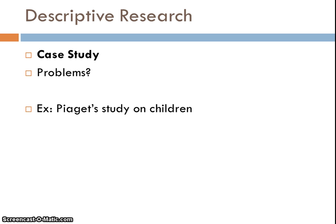Now let's get into descriptive research. One of the first ways you can research something through descriptive research rather than an experiment is through a case study. A case study takes a small group of individuals and studies them throughout time. One psychologist known for his case studies was Jean Piaget, who studied children and how they developed cognitively in their brains over time. The problem with case studies is that because the population you're using is very small, you could run into sample errors or biases. As a researcher, the larger your population, the better.